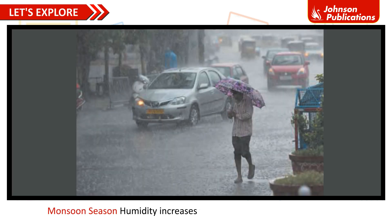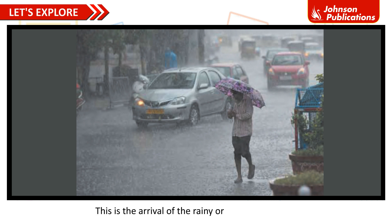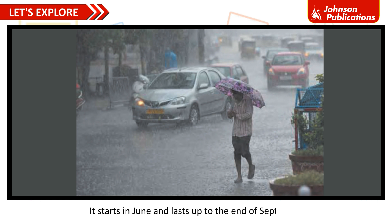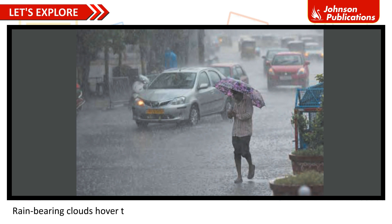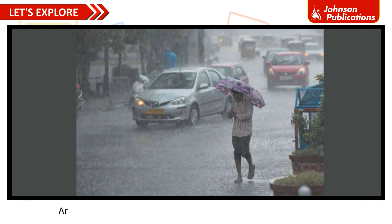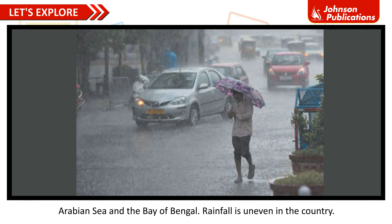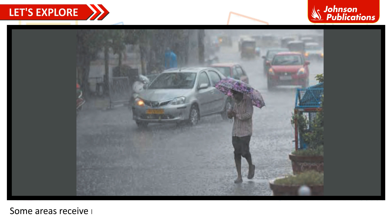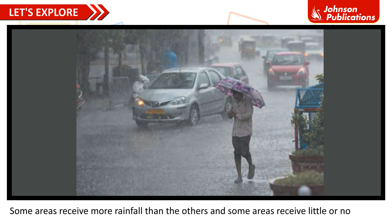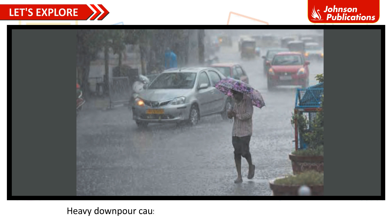Humidity increases towards the end of summer season, marking the arrival of the rainy or monsoon season. It starts in June and lasts up to the end of September. Rain-bearing clouds hover the sky and winds blow towards the mainland of India from the Arabian Sea and the Bay of Bengal. Rainfall is uneven in the country — some areas receive more rainfall than others, and some receive little or no rainfall. Heavy downpour causes floods and landslides in certain regions.